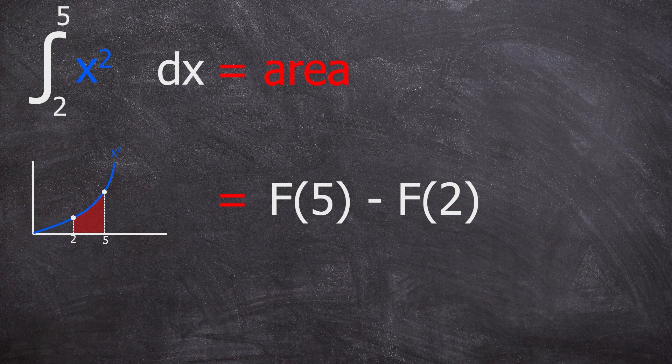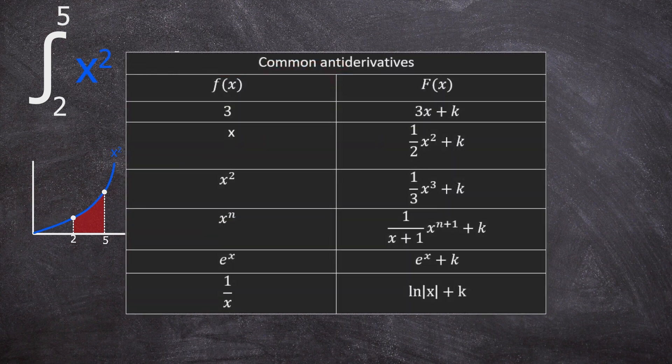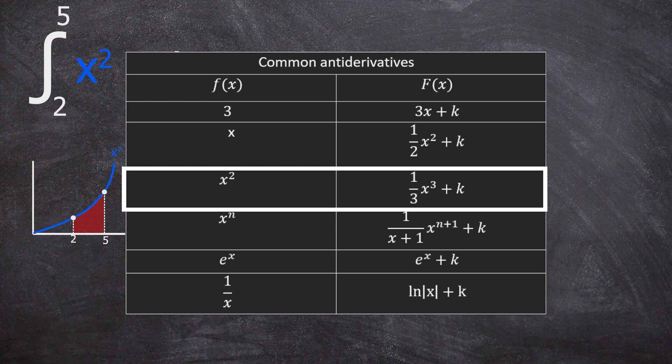Since the function is x squared, let's find that in the lookup table. We see that the antiderivative we have to use is 1 over 3 multiplied by x cubed.